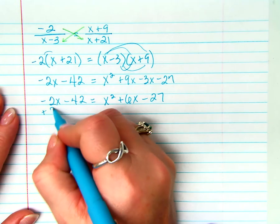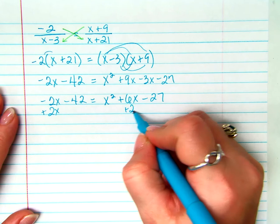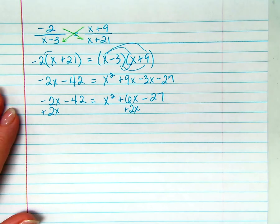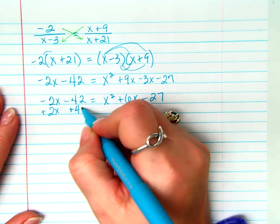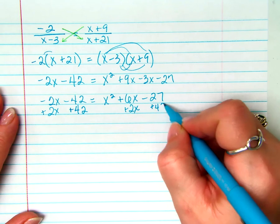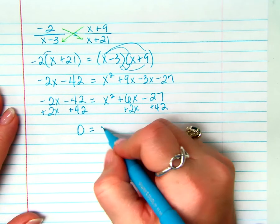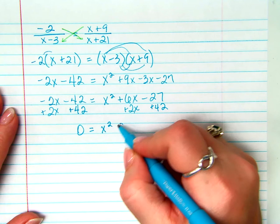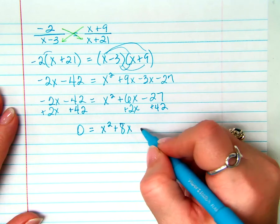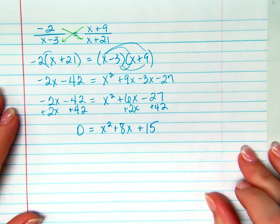So let's do that first. So let's add 2x to both sides. Again, are you okay with me doing two steps at once? So I'm going to add 42 to both sides as well. That does give me 0 on that side. I get x squared here, plus 8x, plus 15.